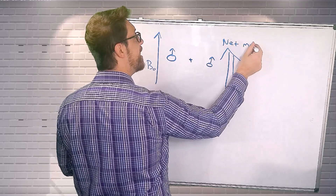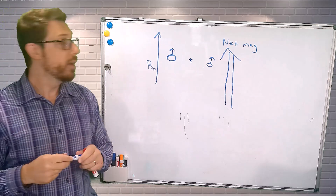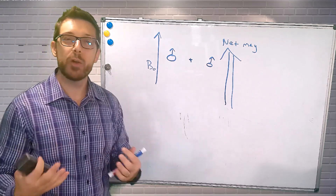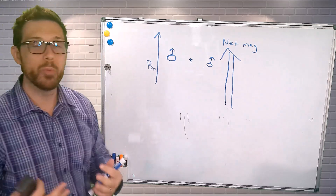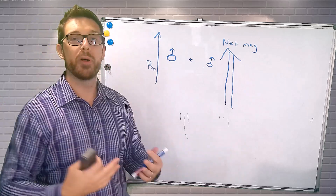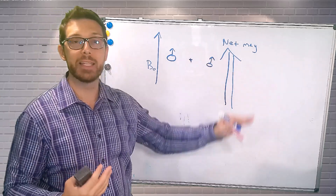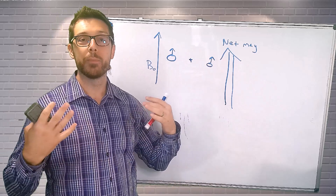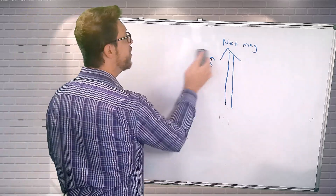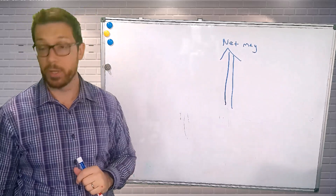So we get net magnetism. Net magnetism is really important because this is what we have to think about. When we're manipulating hydrogen and delivering our pulses, we're tilting this magnetic vector — this net magnetism — and we're manipulating that. I'm going to take the individual proton diagram away so we can deal with just this net magnetism.